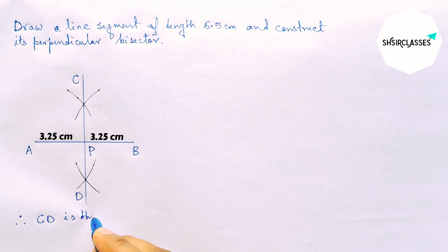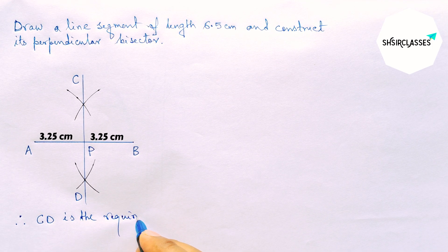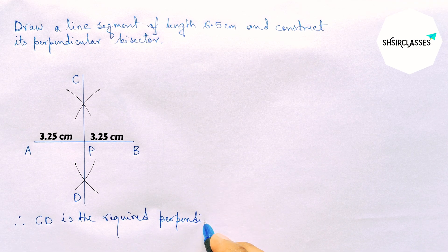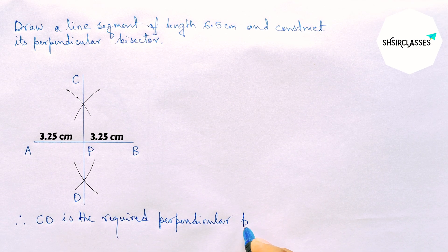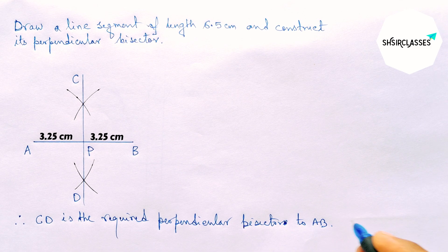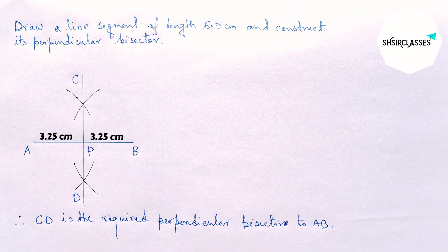Therefore, CD is the required perpendicular bisector to the line segment AB. By this way you can construct a perpendicular bisector to a given line segment. That's all — thanks for watching. If this video is helpful to you, please share it with your friends.